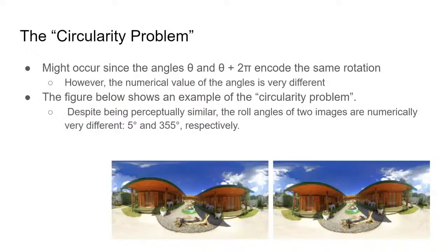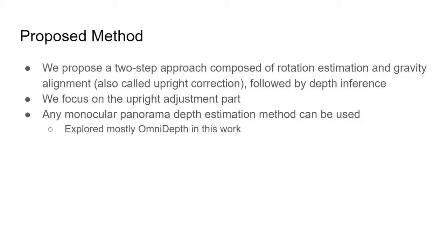One issue common in several gravity alignment methods is the circularity problem. It happens when two images are perceptually similar but the angles are very different. The image below shows an example with rows of 5 and 355 degrees respectively, but with two images very similar to each other. We proposed a two-step approach composed of rotation estimation and gravity alignment, followed by depth inference. Our work focuses on the upright adjustment part, since our method can be used with any monocular panorama depth estimation method.